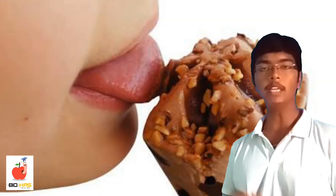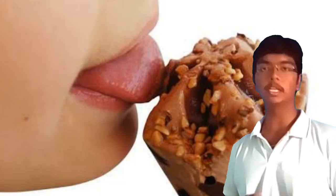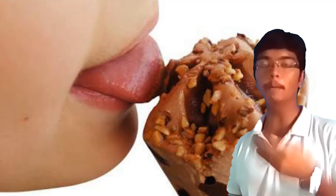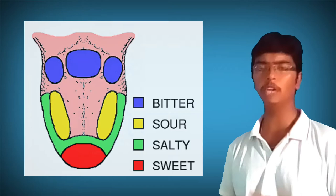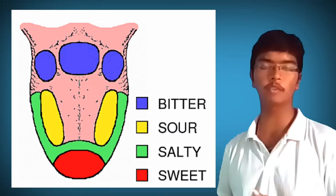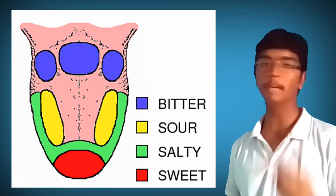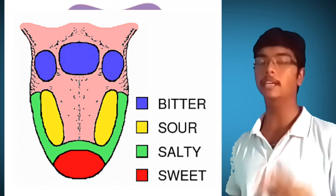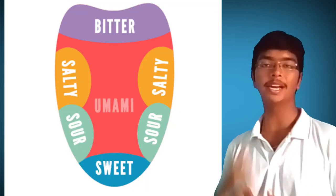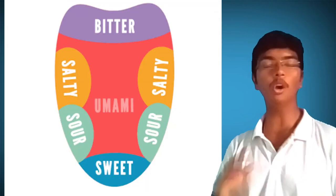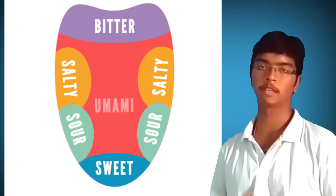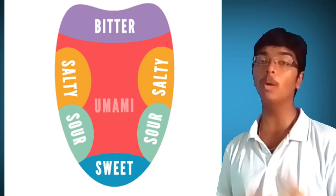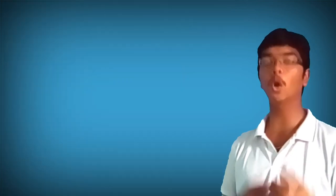Taste. It is now thought to be a myth that we can taste particular flavors at different places on the tongue. We have 5 types of tastes: salty, bitter, sour, sweet, and umami — that is a savory taste. All of these tastes will be picked up all over the tongue. The taste sensors are not only present on the tongue but also in the lining of the mouth.